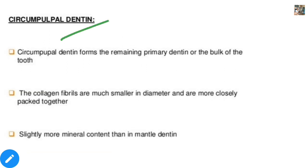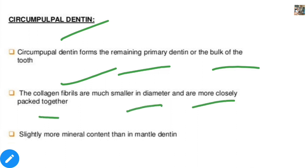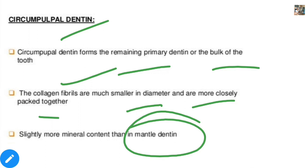The next is circumpulpal dentine. It forms the remaining primary dentine and the bulk of the tooth on the pulp side. Collagen fibers are much smaller in diameter and are more closely packed together. It has slightly more mineral content as compared to mantle dentine.